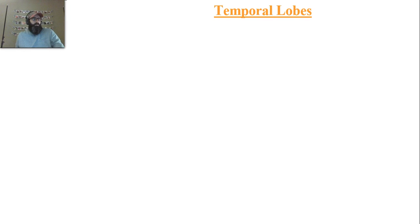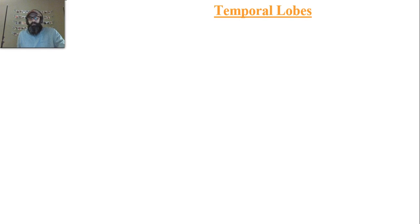Nervous system notes on the temporal lobe — this is nervous system notes part four E. We've been going over the brain and breaking it down into sections. You'll notice this section, part four, tends to be rather long with lots of subsections, but that's because the brain is a really complicated structure. So without waiting much more, let's go ahead and get into the temporal lobe.